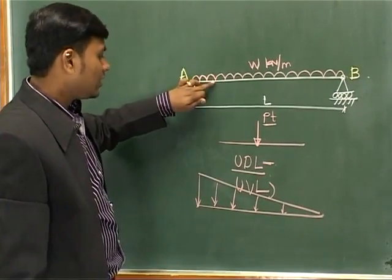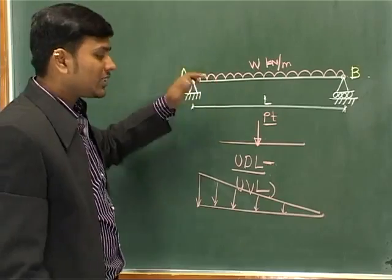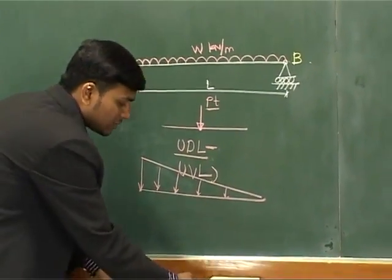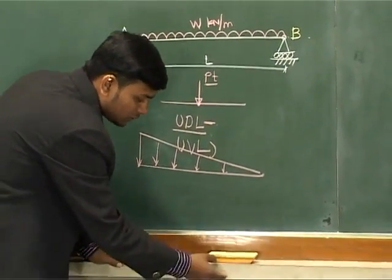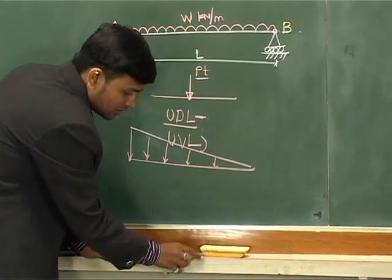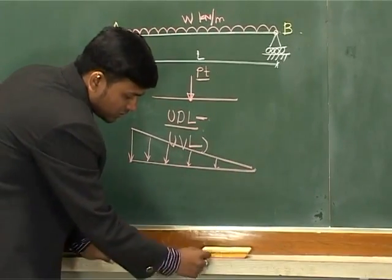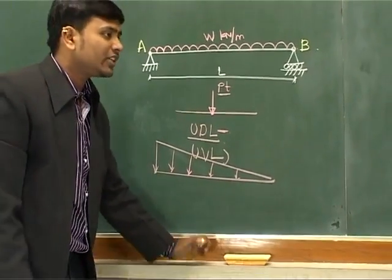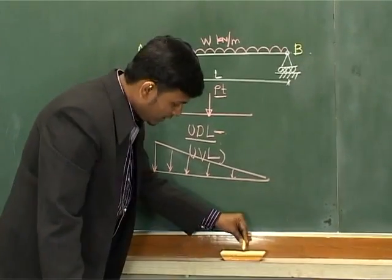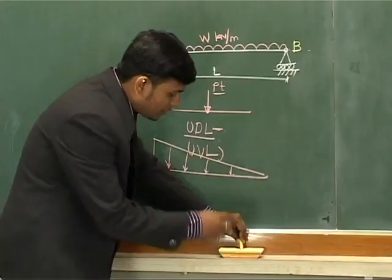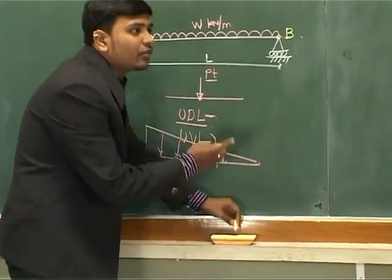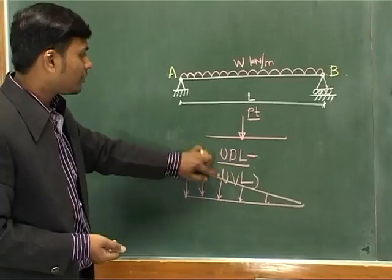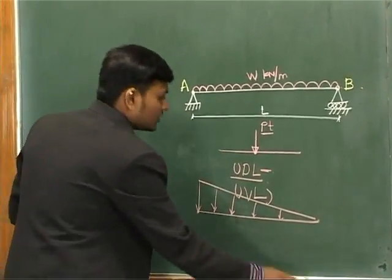In this problem, you have a uniformly distributed load — just like a duster resting on a beam, imparting load uniformly. If I apply a load at a single point, that becomes a point load. So there are three types: UDL, uniformly varying load, and point load.